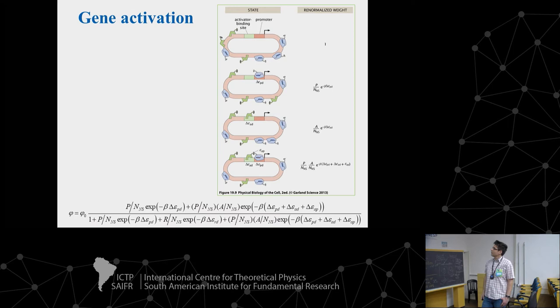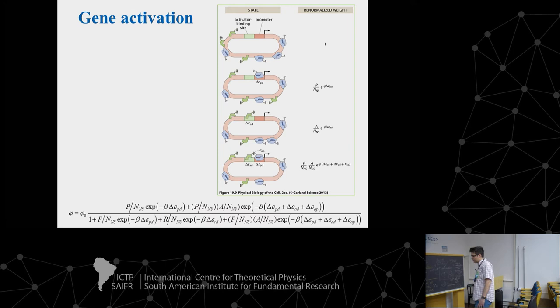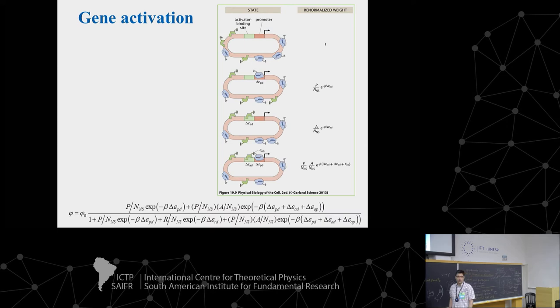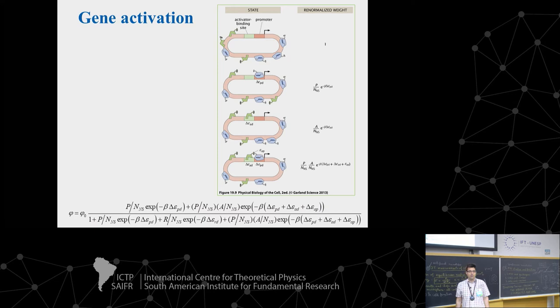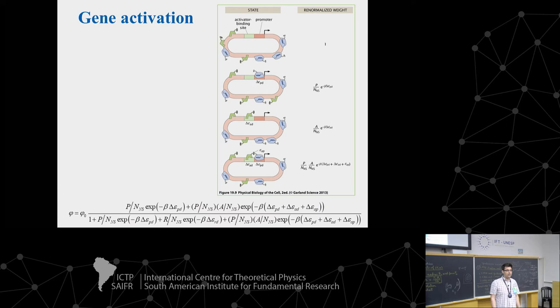These terms make physical sense: larger interaction energy means the protein binds more easily. The entropy contribution reflects that higher protein concentration in solution drives the protein toward DNA — everything tends to increase entropy. If the solution is crowded, the protein wants to escape to the DNA. This is why the statistical weight is proportional to protein concentration.